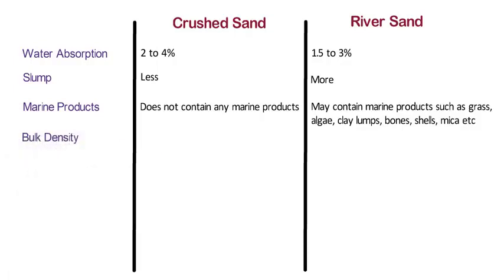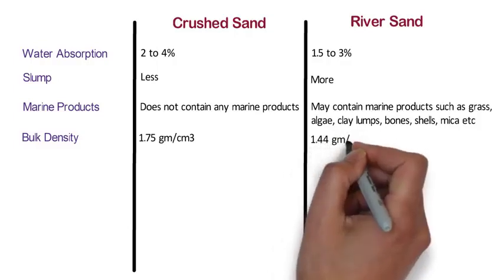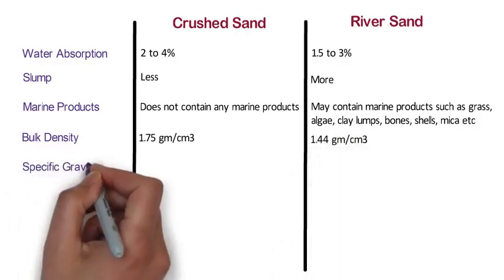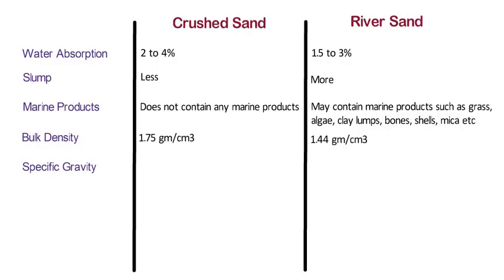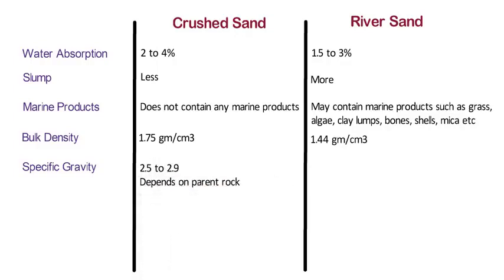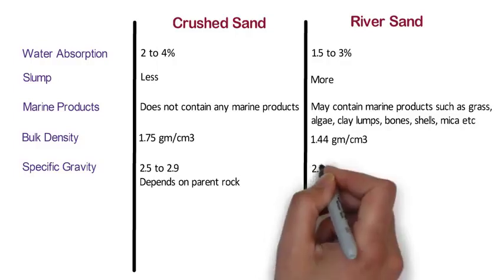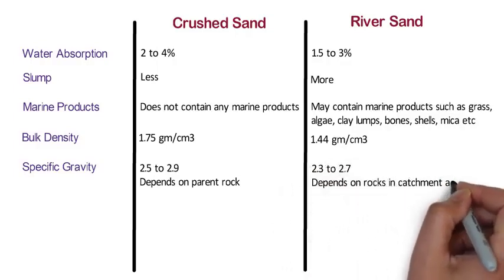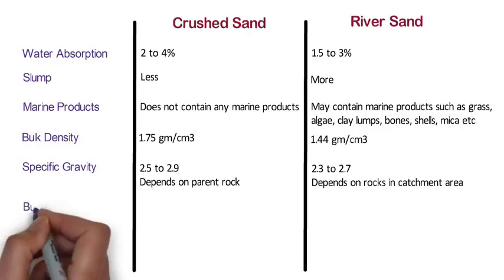Bulk Density: The bulk density of crushed sand is 1.75 kg/m³, whereas the bulk density of river sand is 1.44 kg/m³. Specific Gravity: The specific gravity of crushed sand is 2.5–2.9 and depends on the parent rock, whereas the specific gravity of river sand is 2.3–2.7 and depends on the rock in the catchment area.